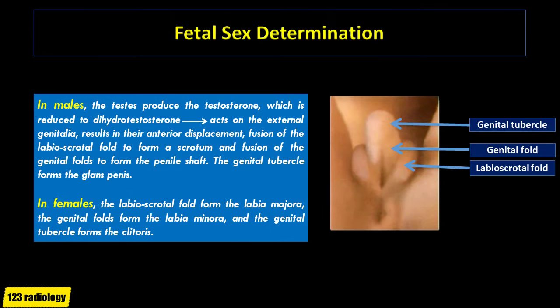As regarding the external genitalia, three organs exist before differentiation: the genital swelling or labioscrotal swelling, the genital folds, and the genital tubercle.